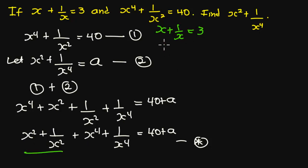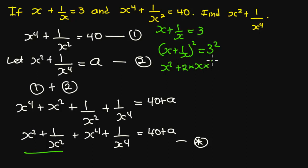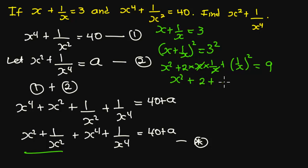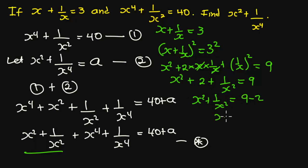To get s squared plus 1 over s squared, we are going to square both sides of the equation. So we have s plus 1 over s all squared equals 30 squared. Expanding, we get s squared plus 2 times s times 1 over s plus 1 over s squared equals 9. The middle term simplifies to 2, leaving s squared plus 2 plus 1 over s squared equals 9, so s squared plus 1 over s squared equals 7.